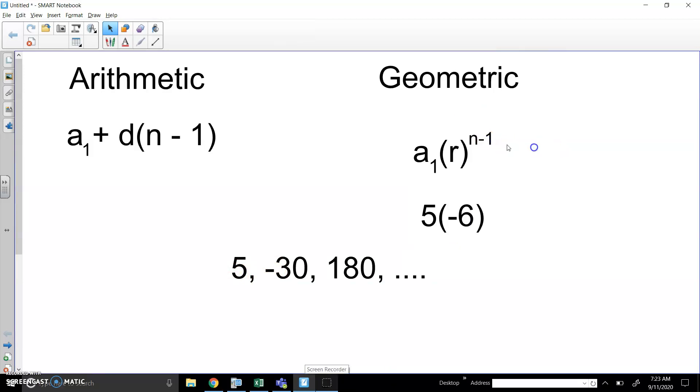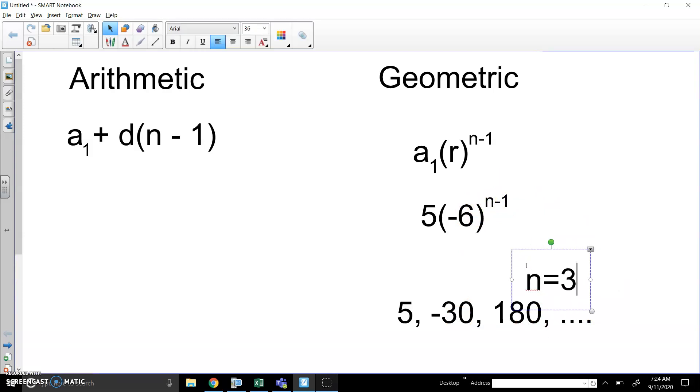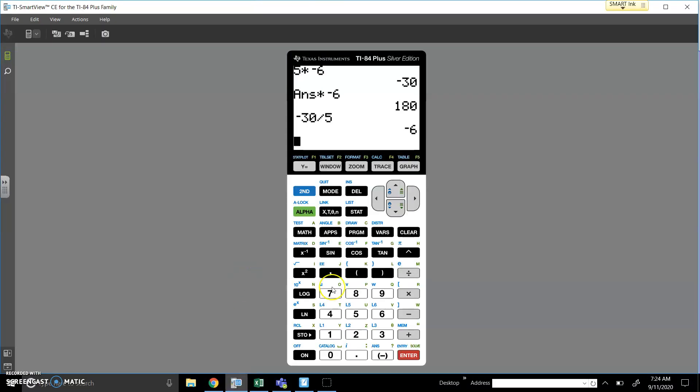This N minus 1 is a part of every answer for the formula for a geometric sequence. And that way, when you plug in 1, you get out the first number 5. When you plug in 2, you get out the second number, negative 30. When you plug in 3, you get 180, and so forth. And so I can test this. For example, when N is 3, I should get out 180. So 5 times negative 6 raised to the 3 minus 1, I get exactly 180.